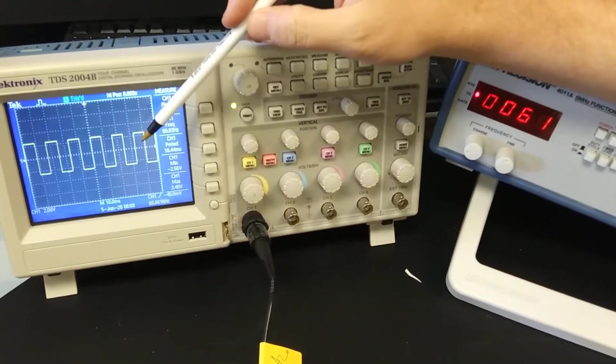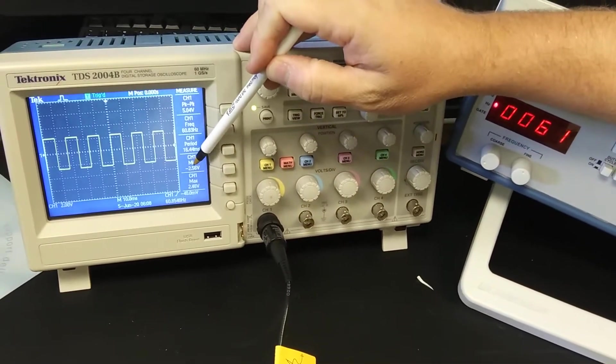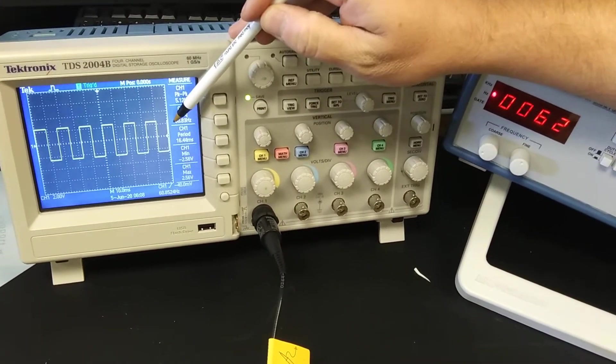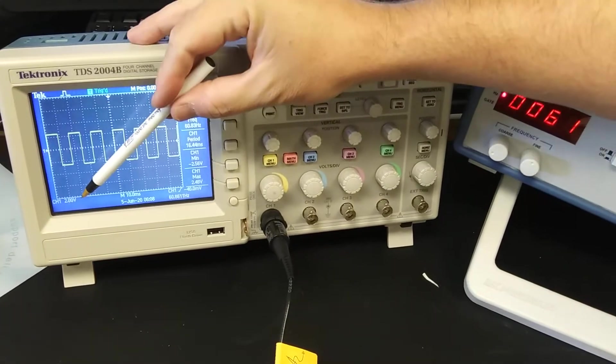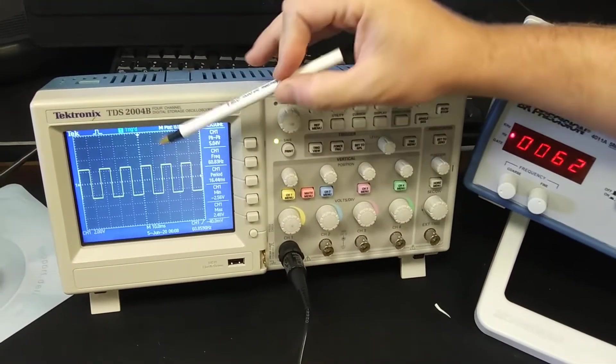So on the screen take a look at this square wave again. Now all I did was I changed the zoom on the screen so notice it's still going from negative 2.5 to positive 2.5.